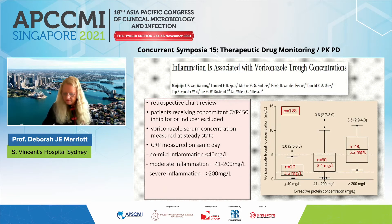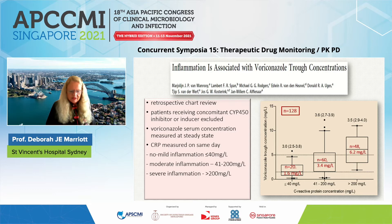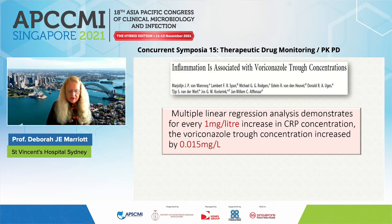In the initial study, this group did a retrospective chart review, excluding patients on drugs that might inhibit or induce voriconazole metabolism, and measured voriconazole serum concentration alongside CRP on the same day. Patients were divided into no-to-mild, moderate, or severe inflammation according to CRP. The median trough concentration — adjusted for dose — rose markedly as CRP rose: 1.6 at low CRP, 3.4 at moderate, and 6.2 when CRP exceeded 200. Multiple linear regression showed that every 1 mg/L increase in CRP raises the voriconazole trough concentration by 0.015 — so at a CRP of 300, an increase of 4.5 in trough concentration would be expected.